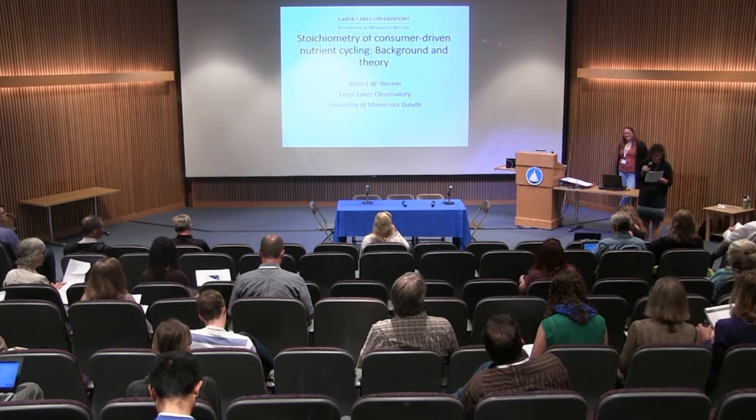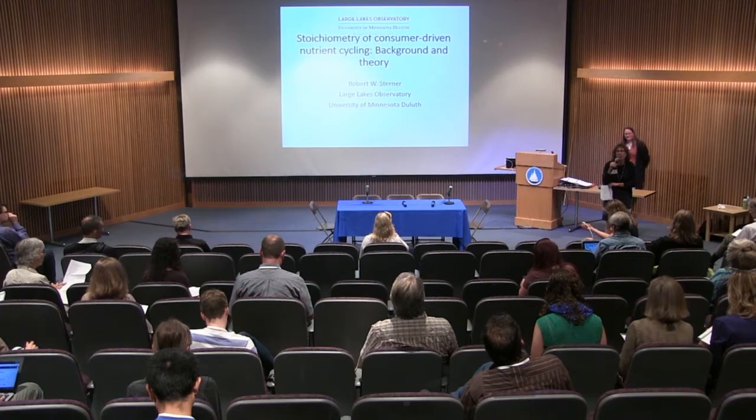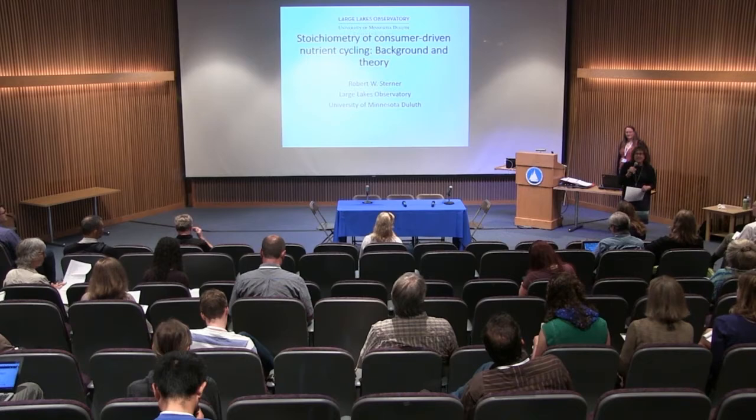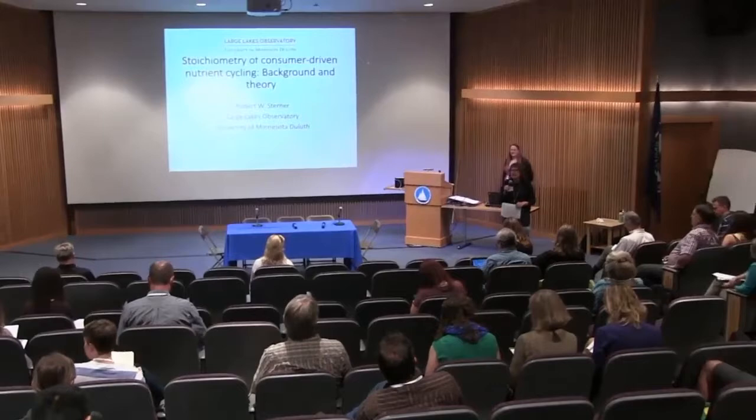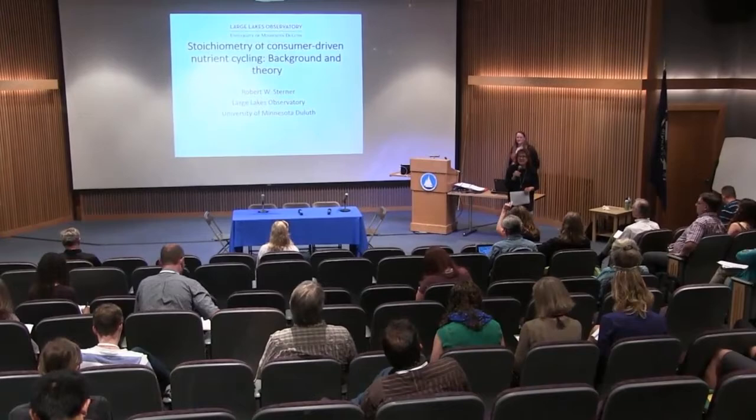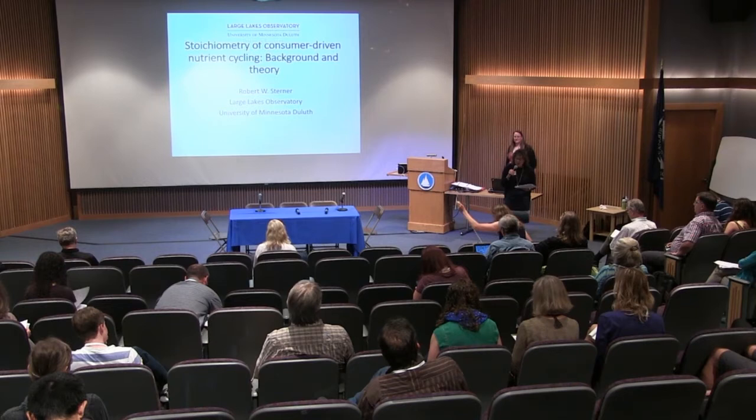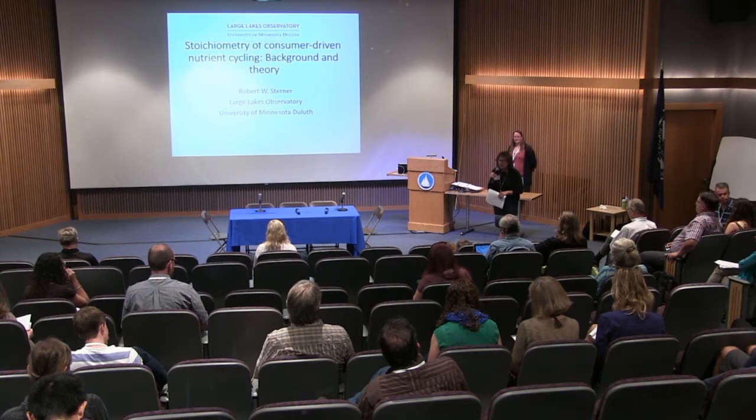Ecological stoichiometry considers how the balance of carbon, nitrogen, phosphorus, and other elements affects and is affected by organisms and interactions between organisms. A lot of the work in the past has focused on marine primary producers, and in this session we wanted to highlight the role of consumers.